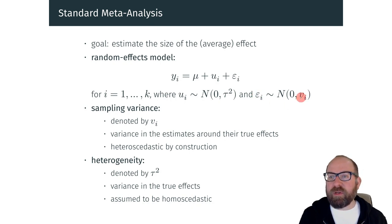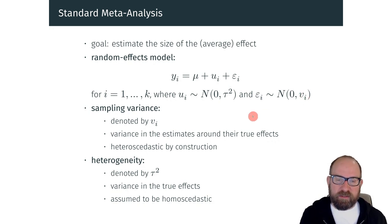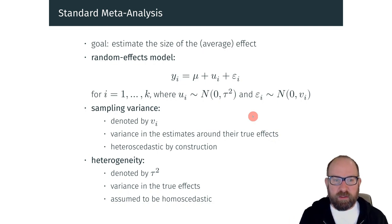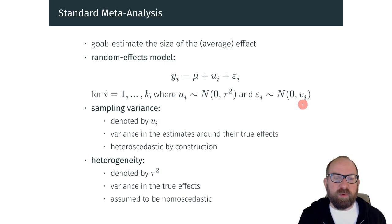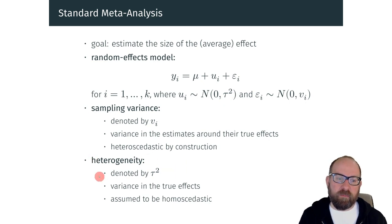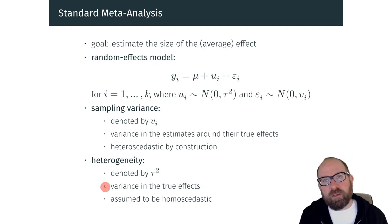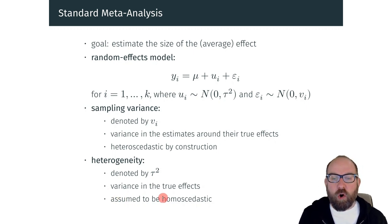These variances, these v sub i's, are known. This represents variance in the estimates around their true effects, while an observed effect is not going to be equal to its true effect because of the sampling variance. These are heteroscedastic by construction — we have bigger studies which tend to have smaller sampling variances, and smaller studies with bigger sampling variances. And then we have another variance component, tau squared, which denotes heterogeneity. This represents the variance in the underlying true effects, and this is assumed to be homoscedastic — that is, it's a constant; it doesn't vary.